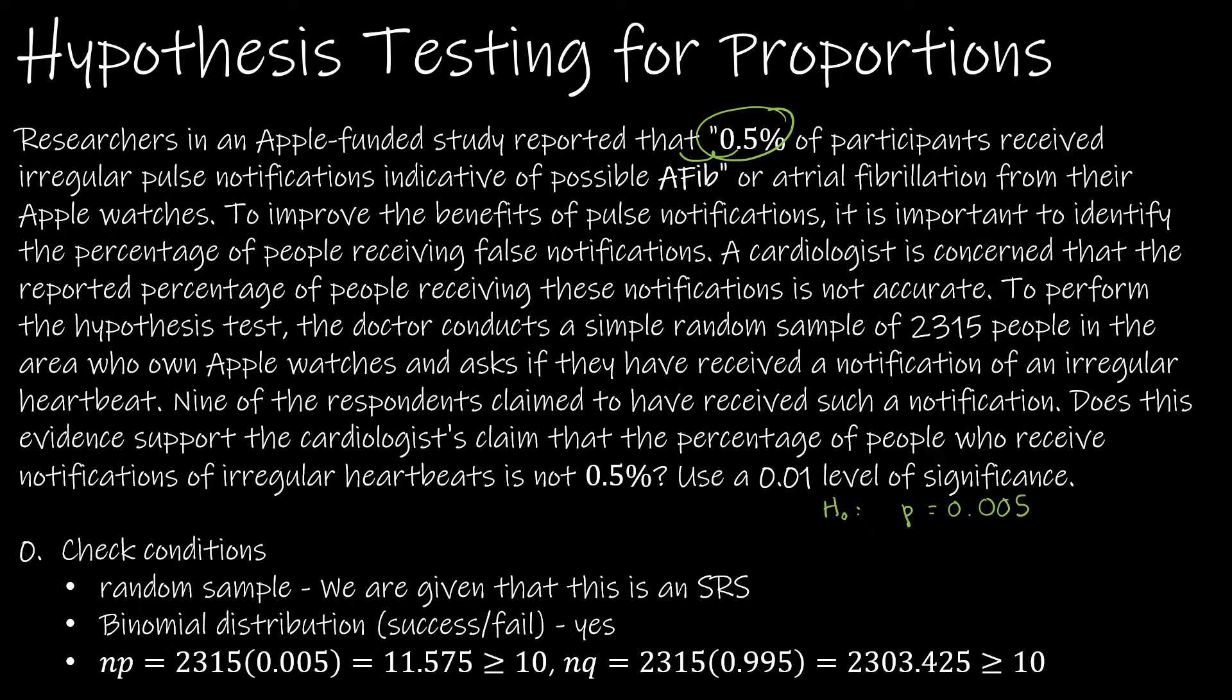To improve the benefits of pulse notifications, it's important to identify the percentage of people receiving false notifications. A cardiologist is concerned that the reported percentage of people receiving these notifications is not accurate. That's what tells us that the alternative hypothesis is not equal to, because not accurate doesn't say it's too high or too low, it just says it's wrong.